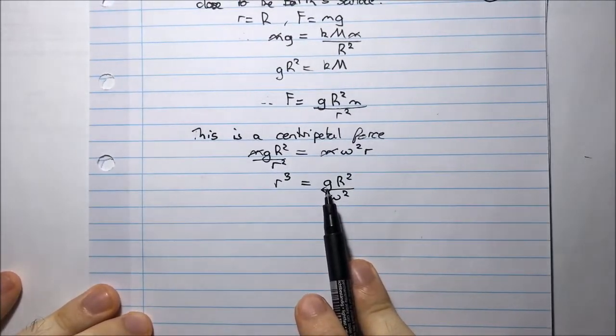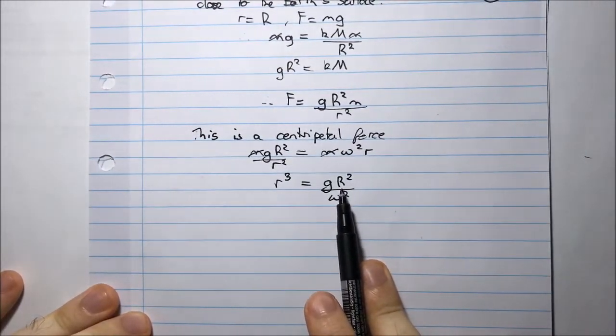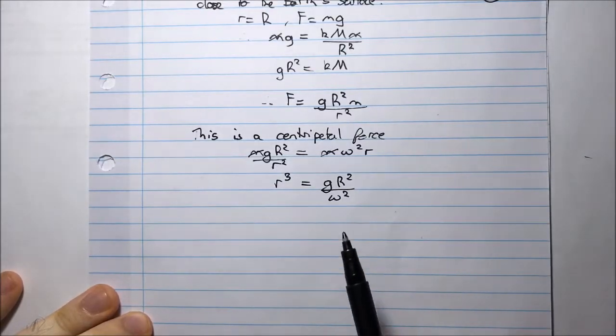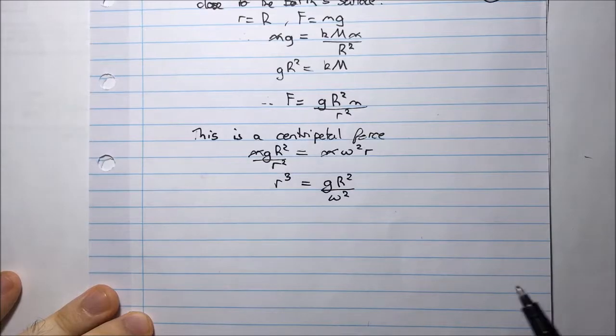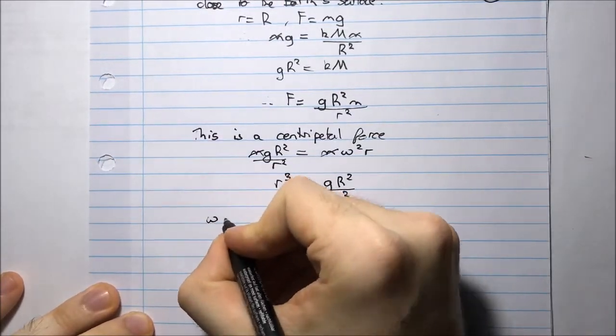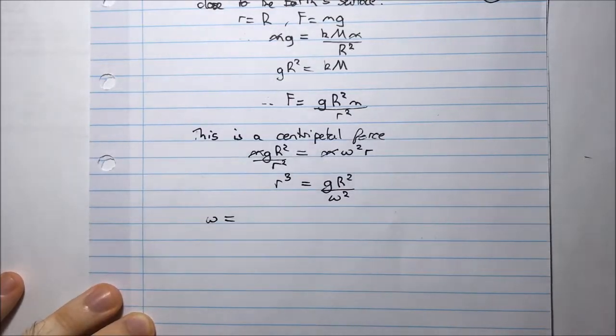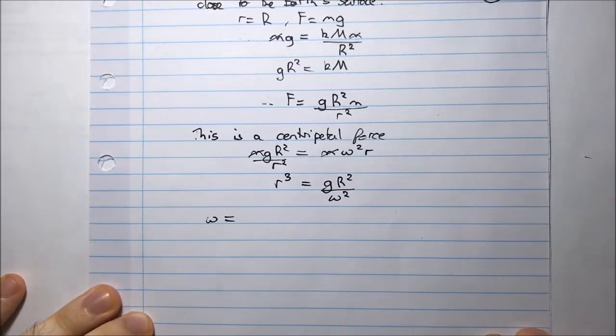I know what g is. I'm given that. It's 9.8. I know what capital R is. That's the radius of the earth, which is approximately 6,400 kilometers. But what about omega? Omega is the angular velocity.